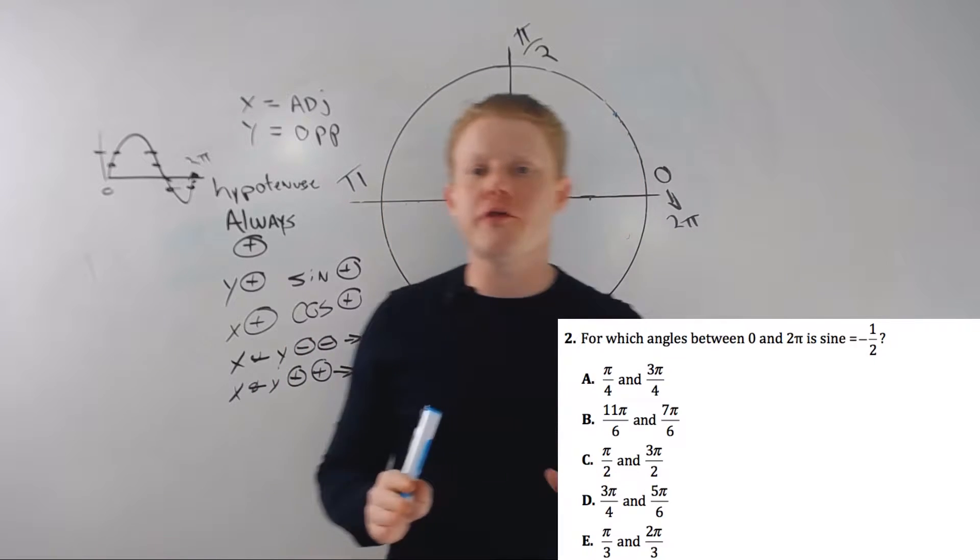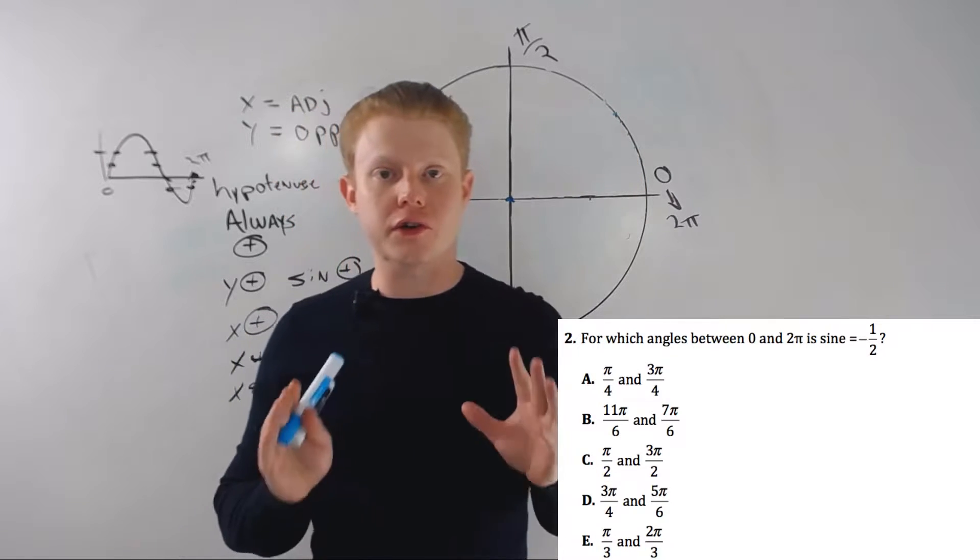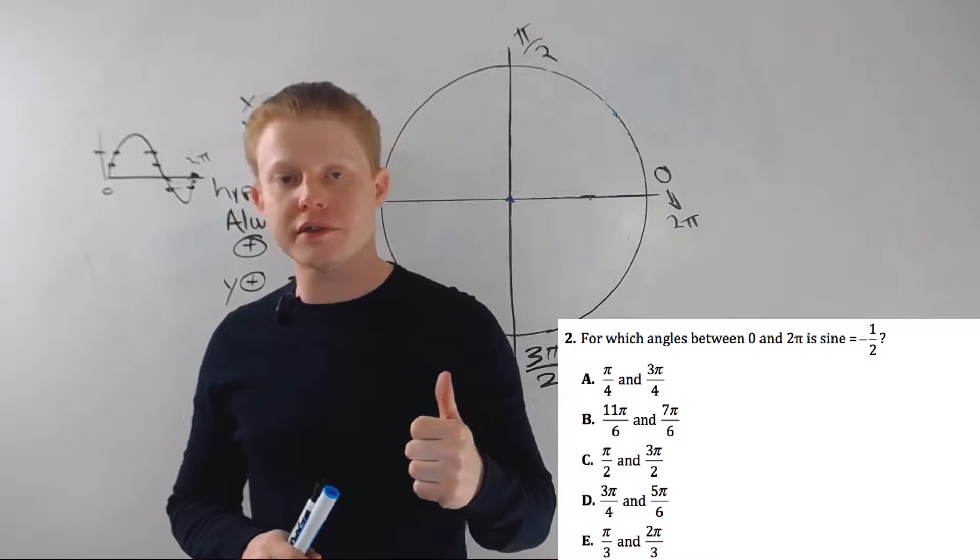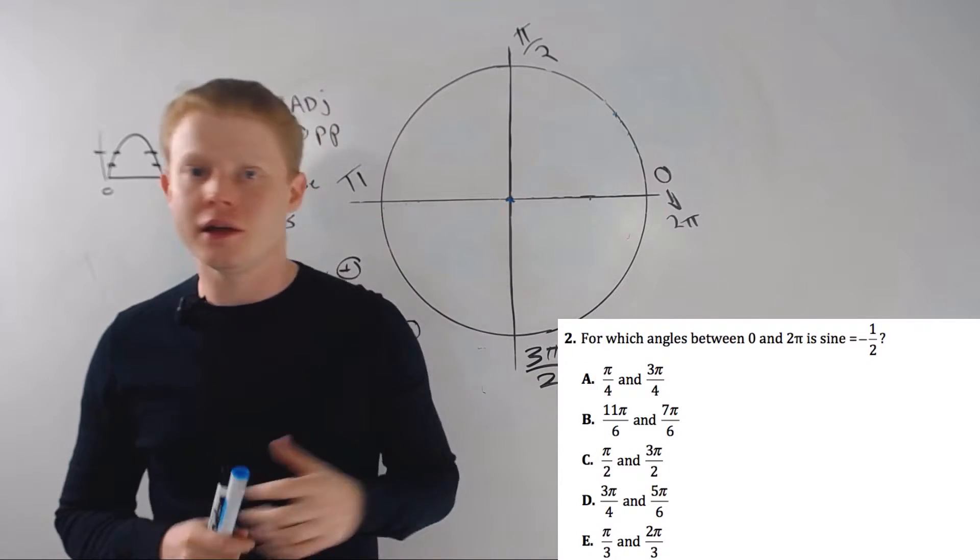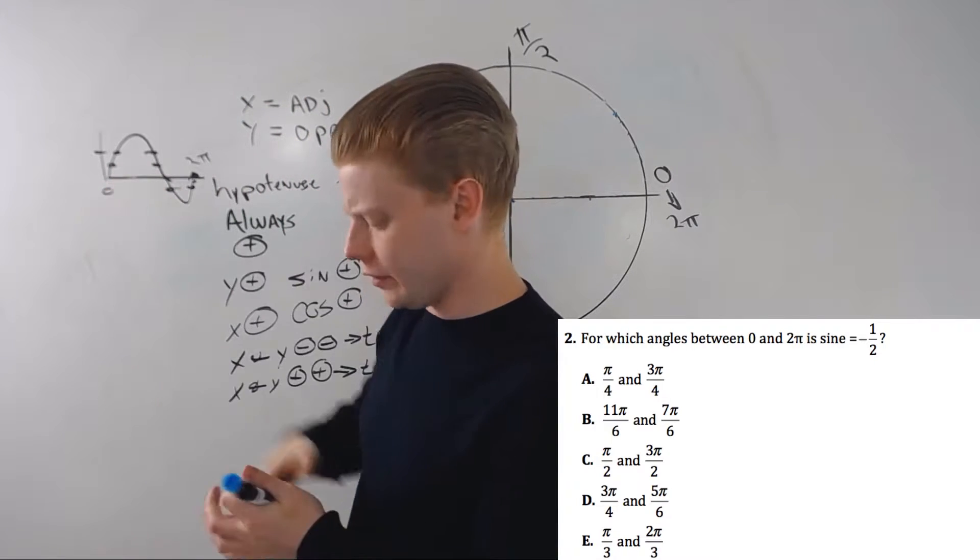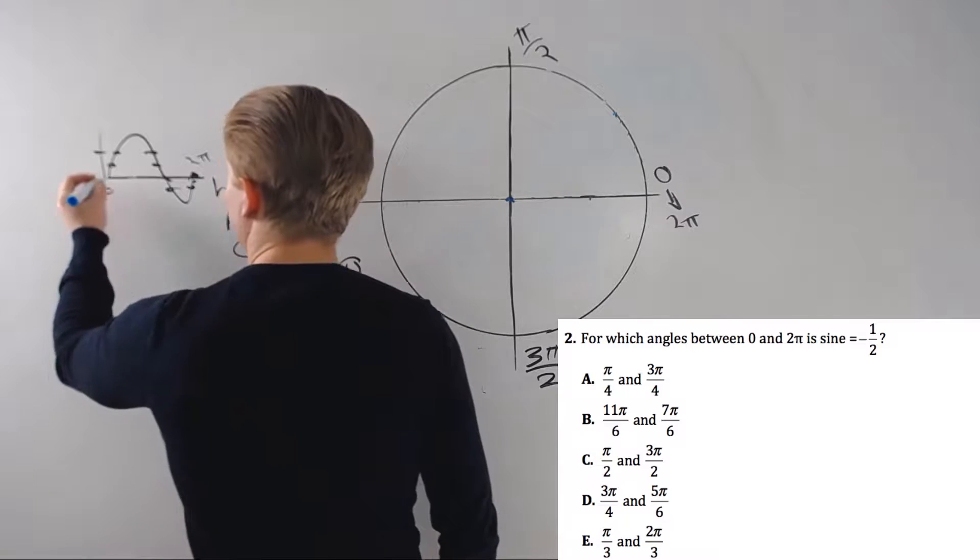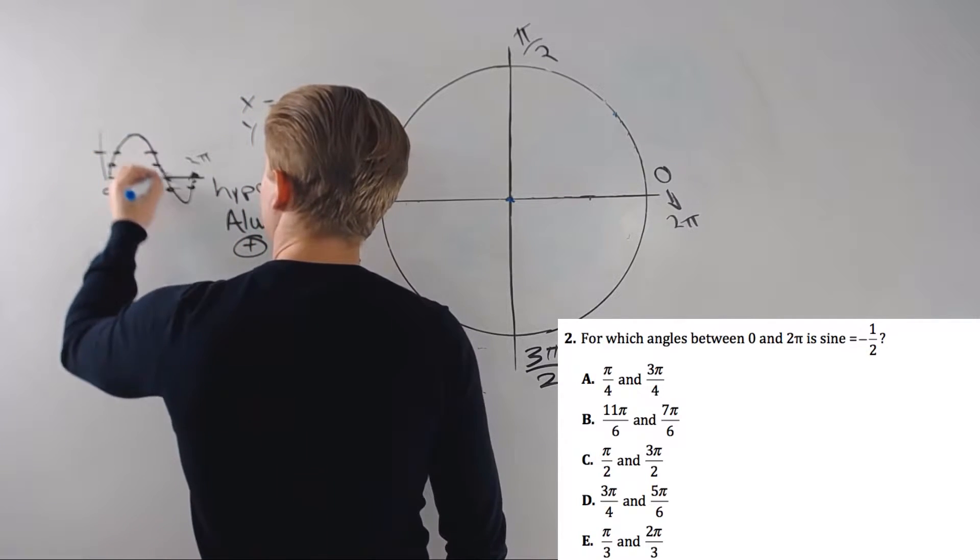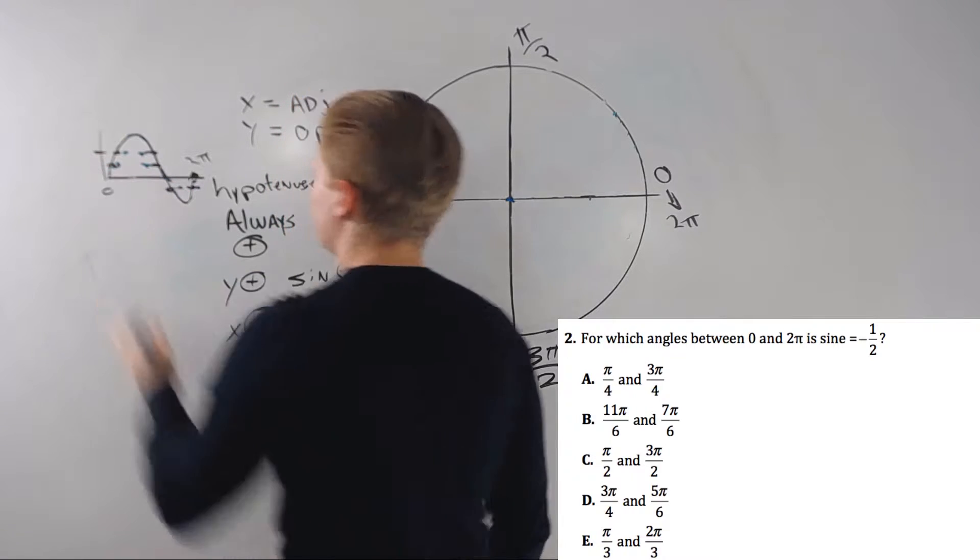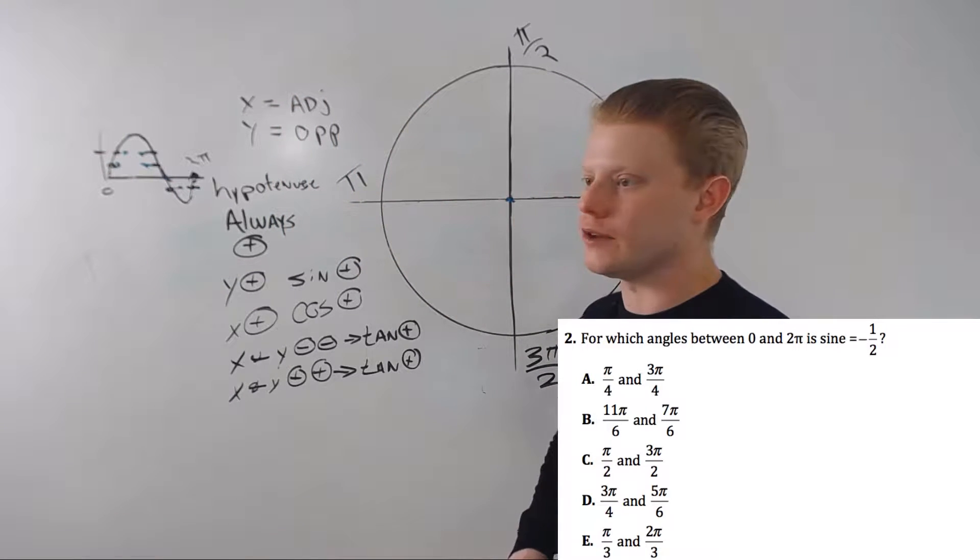Whenever you have this find the angle question, there's a couple of things just to get you started. First, there's always going to be exactly two angles. If you look at my little very scientific sine graph over here, you see that in one complete curve between zero and two pi, each sine value shows up exactly two times. It'll always repeat itself.